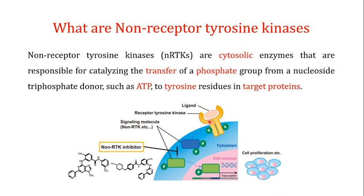Receptor tyrosine kinases are transmembrane receptors with three domains: an extracellular domain, a transmembrane domain, and an intracellular domain. In receptor tyrosine kinases, the tyrosine kinase activity is an integral part of the receptor itself. Non-receptor tyrosine kinases, by contrast, are cytosolic enzymes — they are not part of any receptor and exist freely in the cytoplasm. Both types still function as tyrosine kinases, attaching phosphate groups to tyrosine residues in target proteins.